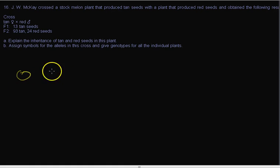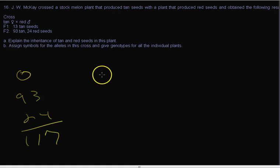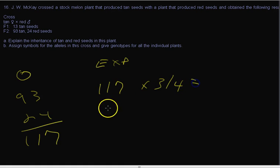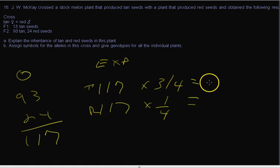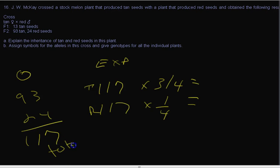To actually do the chi-square, we need observed and expected numbers. Our observed numbers were 93 and 24, which add up to 117 total. Based on our hypothesis, we expect three-fourths of one kind (tan) and one-fourth of the other (red). It's important to express a 3 to 1 ratio as three-fourths to one-fourth because you need those fractions — you multiply the total by the fraction to get expected values.